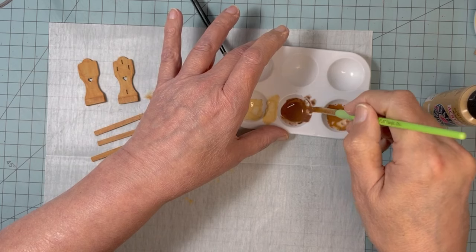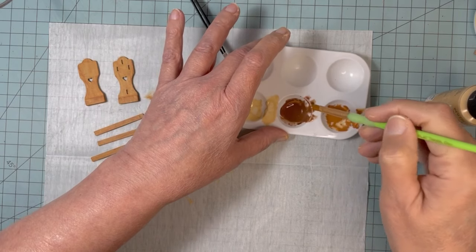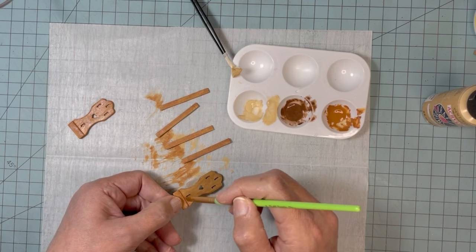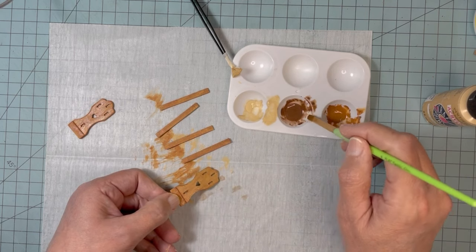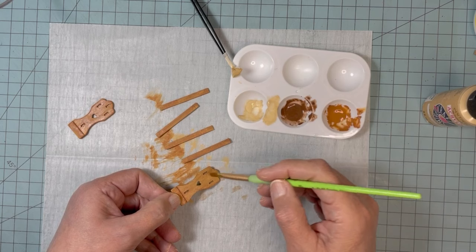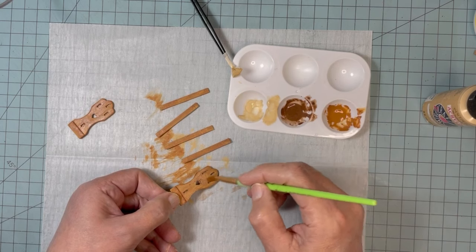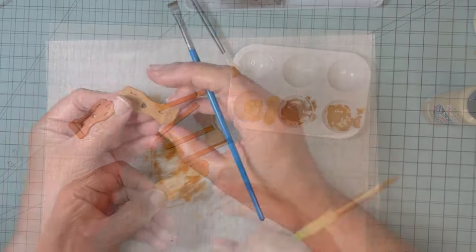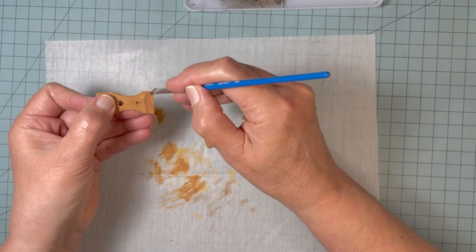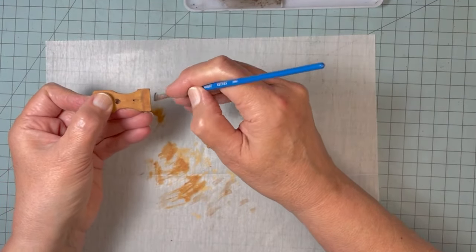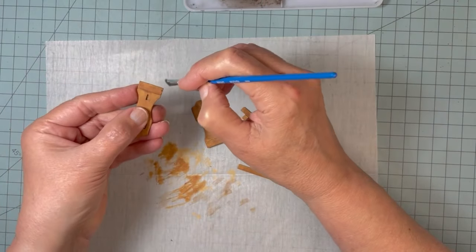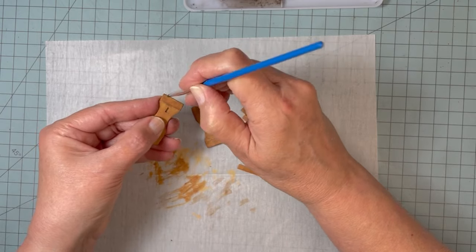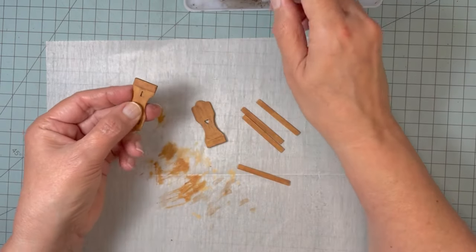And now I'm applying a dark brown water wash to give me some more wood grain. And now I'm dirtying it up with some chalk pastels—I have black and brown mixed together.